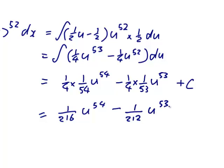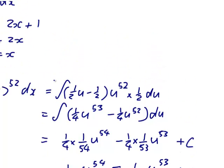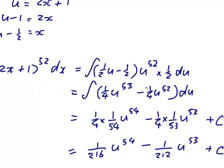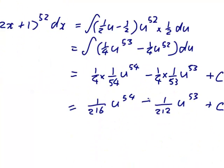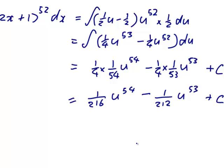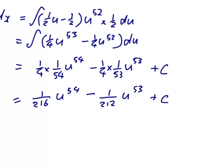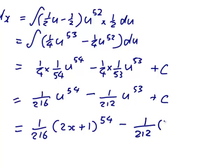There it is. 2x plus 1. Okay. So we're getting... That's equal to 1 over 216 times 2x plus 1 to the 54 minus 1 over 212 times 2x plus 1 to the 53 plus c.